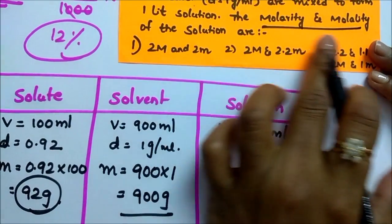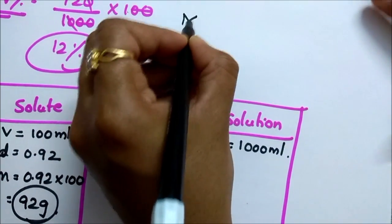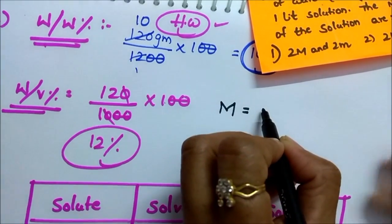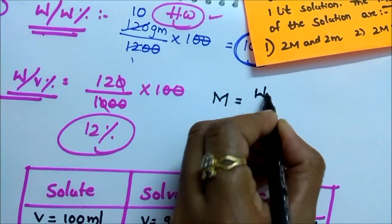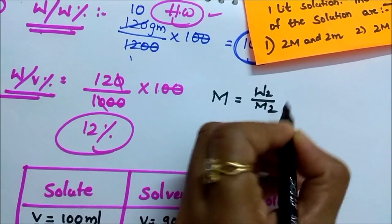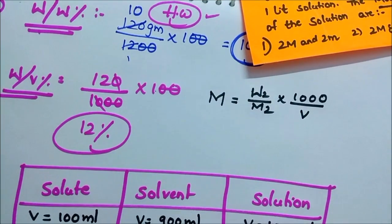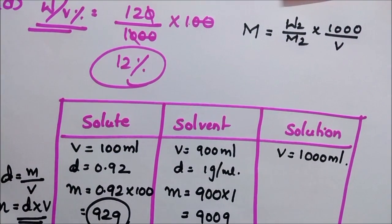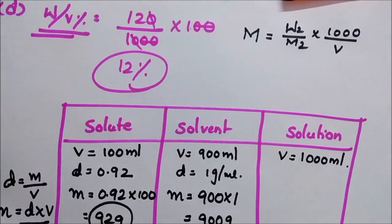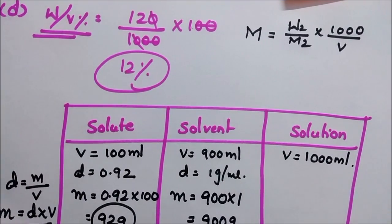You want to calculate molarity. What is molarity? Molarity is number of moles of solute by volume of solution in liter, or we derived one more formula - w2 by m2 into 1000 by volume of solution. Without using the interconversion formulas I am using this tabular column.